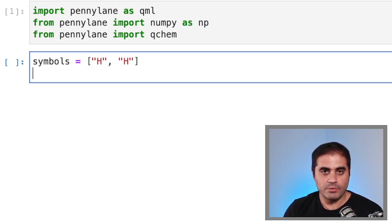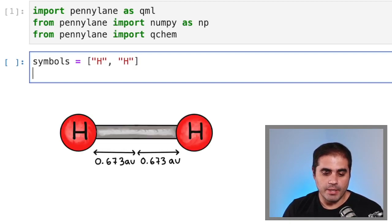Press Enter. And then we need to tell PennyLane what the geometry of the molecule is. We will take this information from a database. The hydrogen molecule is just two atoms of hydrogen that are equidistant from a center at 0.673 atomic units. So let's tell this to PennyLane through coordinates.